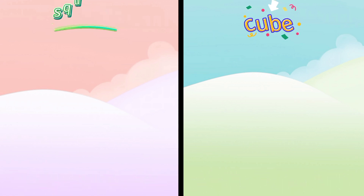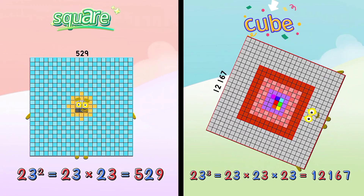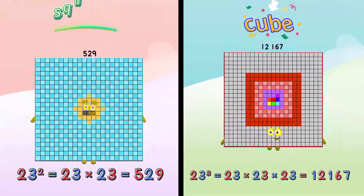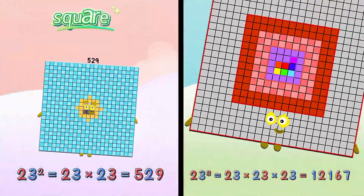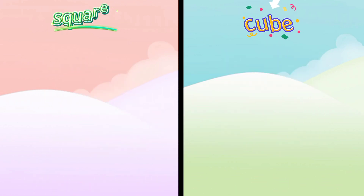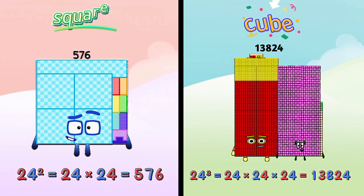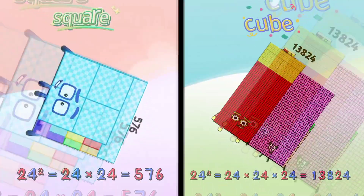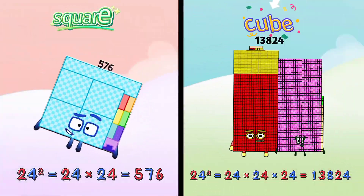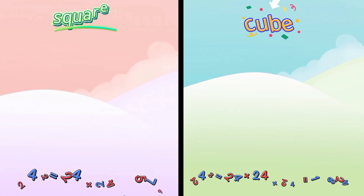Square of 23 is 529, and cube of 23 is 12167. Square of 24 is 576, and cube of 24 is 13824.